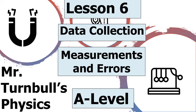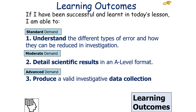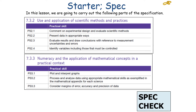Hello and welcome to today's lesson where we're going to look at data collection, which forms part of the measurements and errors topic in AQA A-level physics. In today's lesson we're going to try to understand how we collect data in a scientific investigation. By the end you should be able to understand the different types of errors and how they can be reduced, how to present scientific results in an A-level format, and how to produce a valid investigative data collection.